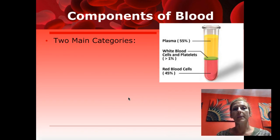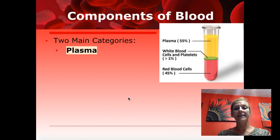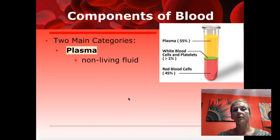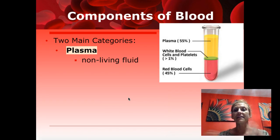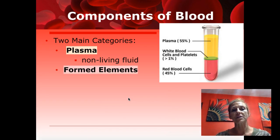We're going to start with the two main categories — everything falls under either plasma or a cellular component. Plasma is the liquid portion of the blood. Blood is actually a connective tissue, categorized by its extracellular matrix and the cells that live within it. So the plasma would be the matrix of the blood — the non-living portion — and then the formed elements are the cells or cellular components.